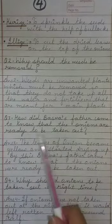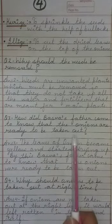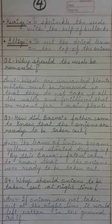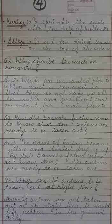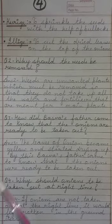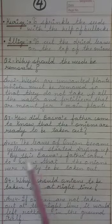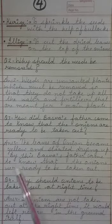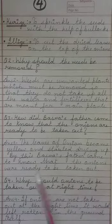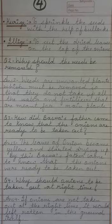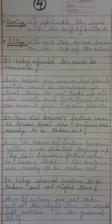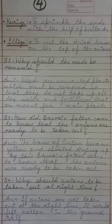Question 3: How did Baswaa's father come to know that the onions are ready to be taken out? Baswaa ke father ko kaise pata chala ki onions ab taiyar hain bahar nikalne ke liye? Answer: The leaves of the onion became yellow and started drying up. By this, Baswaa's father came to know that the onions were ready to be taken out. Onion ki jo leaves thi woh yellow hone lagi thi aur sookhne lagi thi, toh isse pata laga ki onions taiyar ho gayi hain.